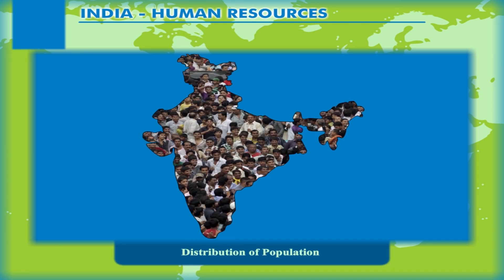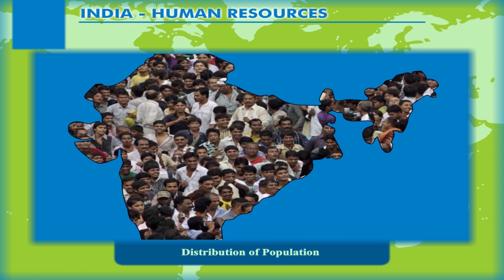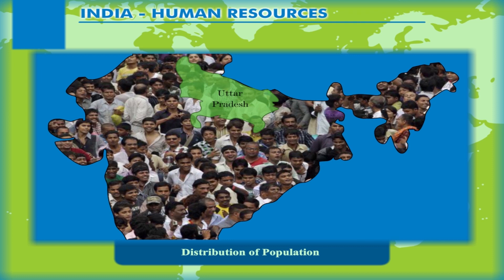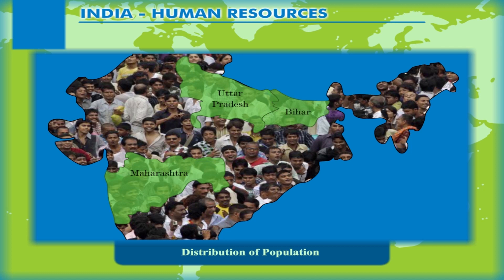India has a highly uneven pattern of population distribution. The percentage shares of population of the states and union territories in the country show that Uttar Pradesh has the highest population, followed by Maharashtra, Bihar and West Bengal.